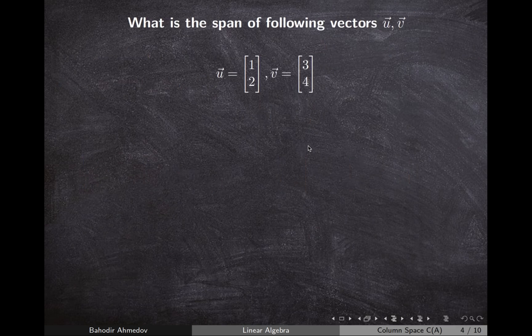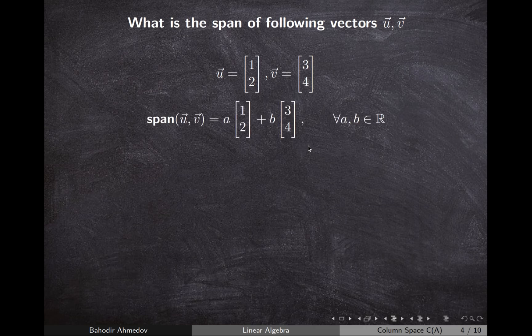Now let's consider another example. Given the vectors u = (1, 2) and v = (3, 4), we want to understand what the span of these two vectors is. Mathematically, the span is all possible combinations a·u + b·v for all possible values of a and b.